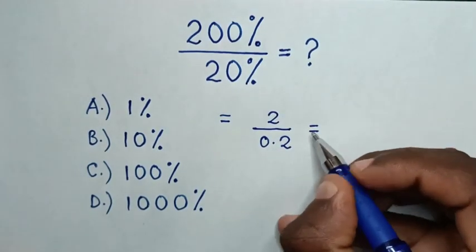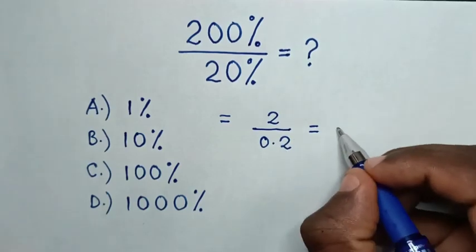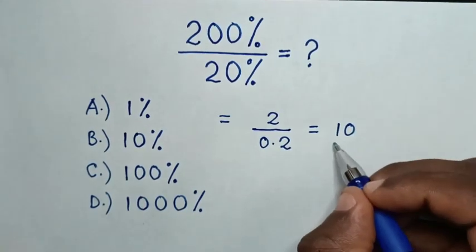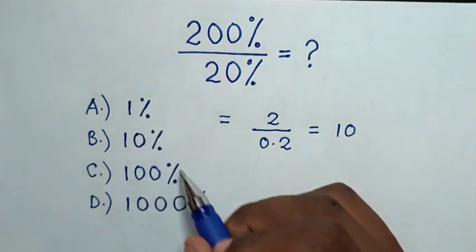Then it's equal to 2 divided by 0.2 is 10. Then this is in decimal, but our answers are in percentage.